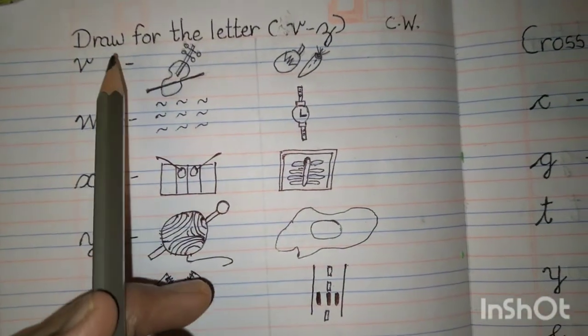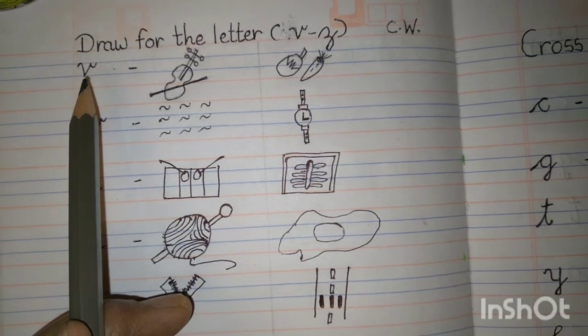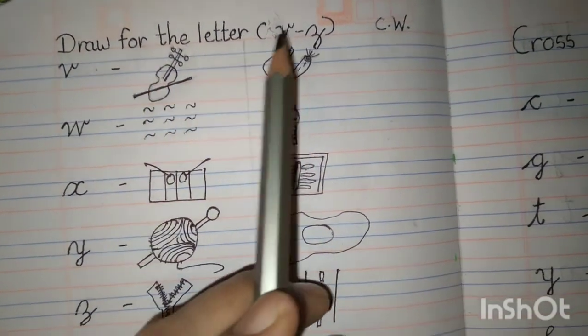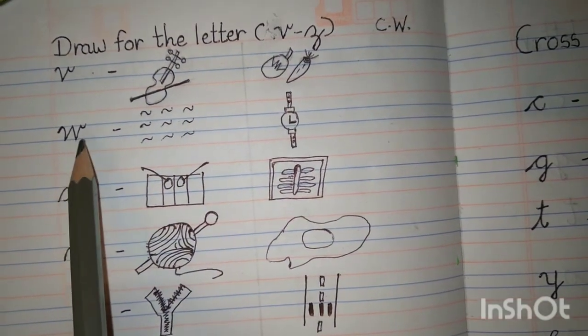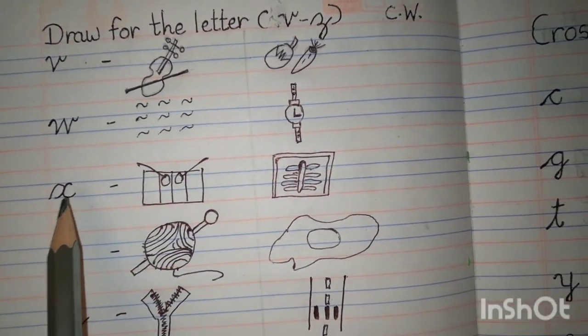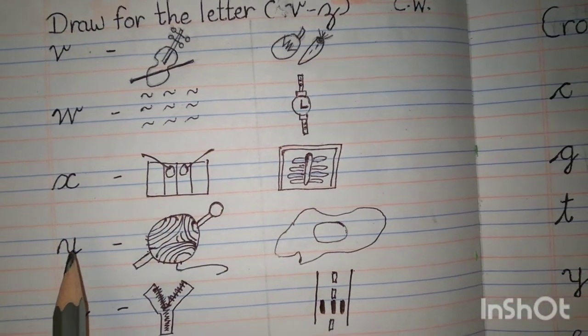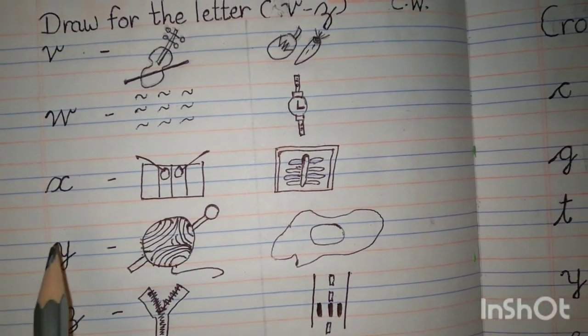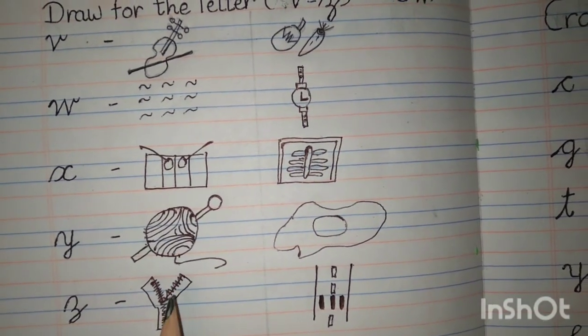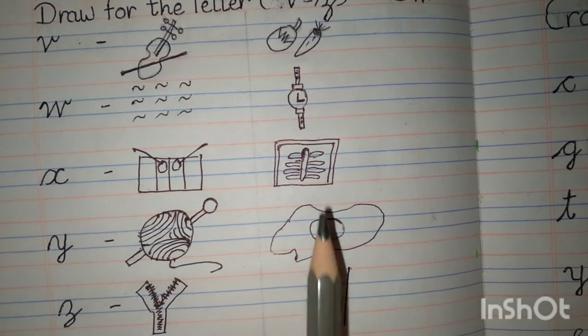Let's quickly go through. Cursive V, V for violin, V for vegetables. W for water, W for watch. X for xylophone, X for x-ray. Y for yarn, Y for yolk. Z for zip, Z for zebra crossing.